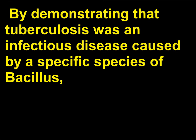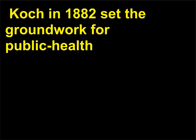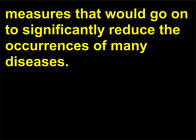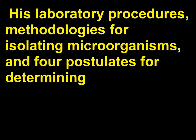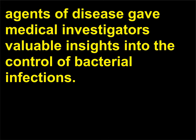By demonstrating that tuberculosis was an infectious disease caused by a specific species of bacillus, Koch in 1882 set the groundwork for public health measures that would go on to significantly reduce the occurrences of many diseases. His laboratory procedures, methodologies for isolating microorganisms, and four postulates for determining agents of disease gave medical investigators valuable insights into the control of bacterial infections.